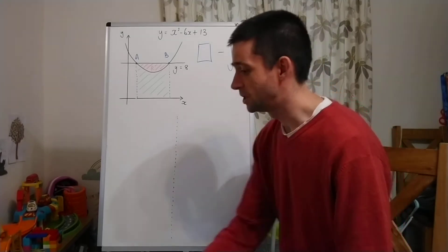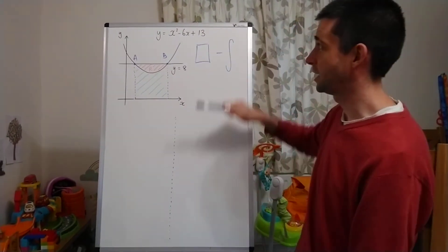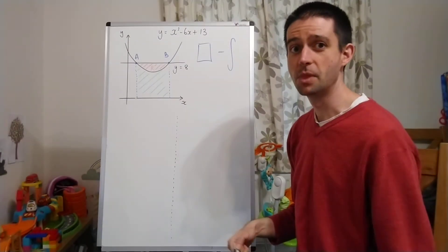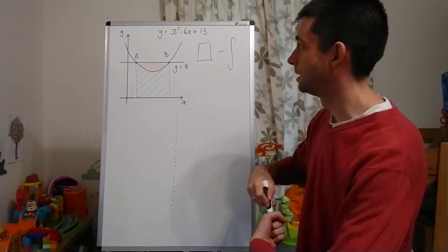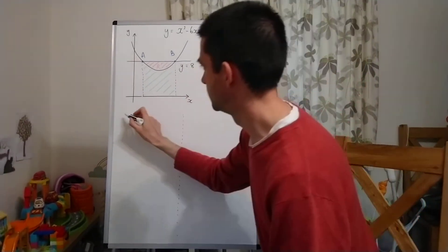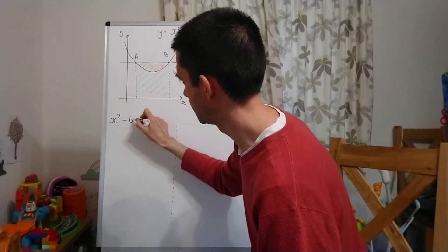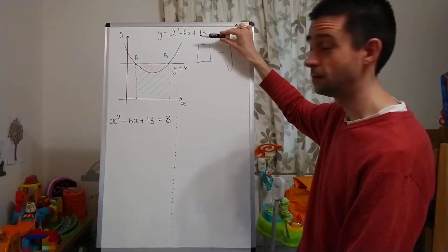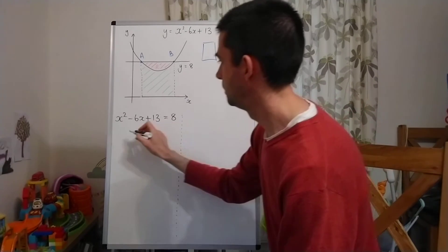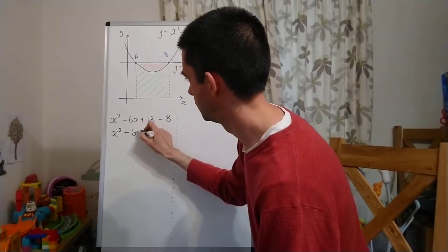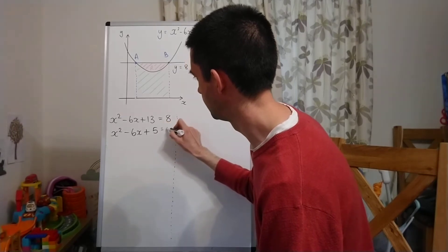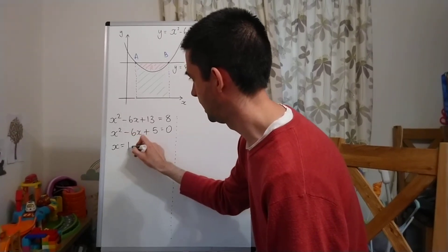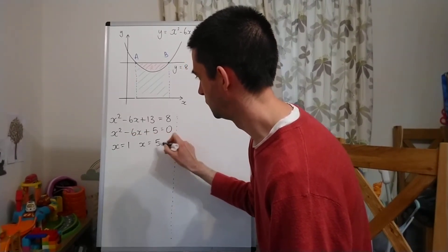First of all, I need to find the points A and B. A and B are the points of intersection between this curve and this line. When I have points of intersection I want to be solving simultaneously. So, setting x squared minus 6x plus 13 equal to 8 and solving simultaneously, if I subtract 8 from both sides I get x squared minus 6x plus 5 equals 0. I get a quadratic, and the solutions to that quadratic are x equals 1 and x equals 5.